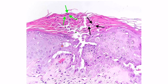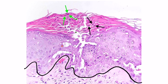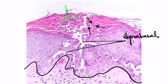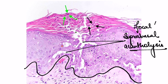Coming back to this slide, the features you can see here include focal suprabasal acantholysis — that is separation of keratinocytes — as well as dyskeratosis, which is abnormal keratinization. Due to this dyskeratosis, two important cells are seen: corps ronds and corps grains.